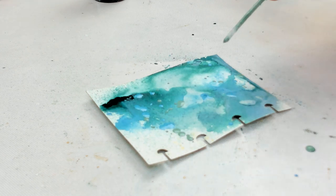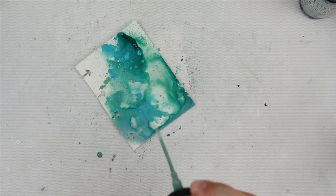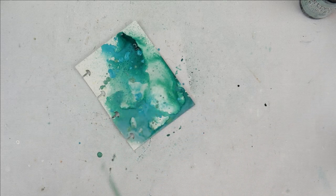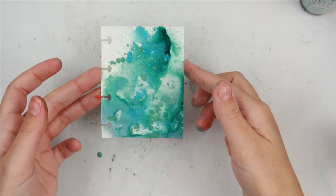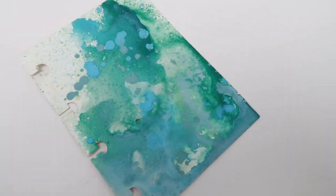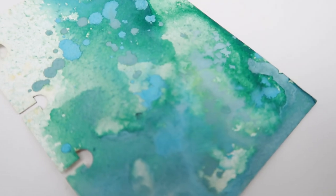Then I splatter on some Evergreen Bough and Broken China Distress Oxide Spray and then of course I splatter on some Speckled Egg Oxide Spray as well. Even though this combination is pretty basic I absolutely love how the colors look together.